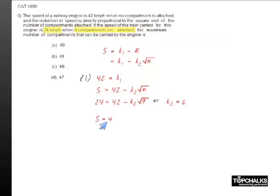42 minus 6 root n. This will be the speed of the train when n represents the total number of compartments attached to the train. We need to find out what is